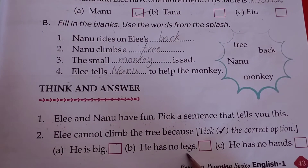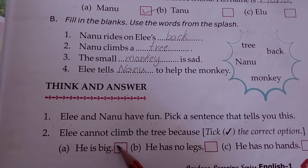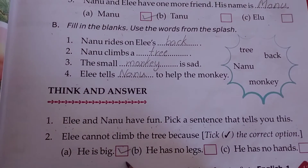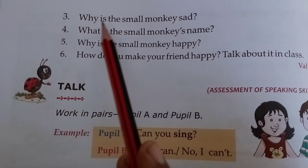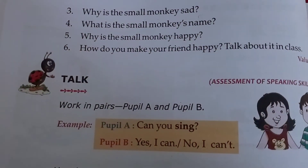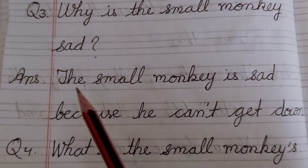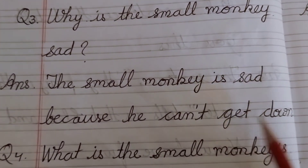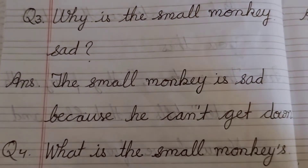Ali is not able to climb the tree because he is big — he has no legs, he has no hands. Ali is not able to climb the tree because he is big. Question number 3: Why is the small monkey sad? The small monkey is sad because he can't get down.